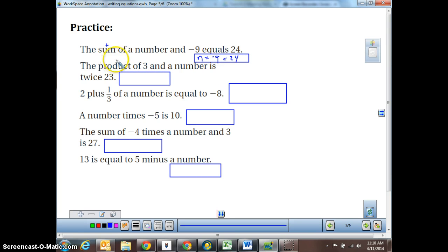The product, that's multiplying, the answer to multiplication, of 3 and a number is twice 23. The product of 3 and a number, so 3n is equal to 2 times 23. Twice 23 is 2 times 23. The product of 3 and a number is 2 times 23. So 3n is equal to 2 times 23.